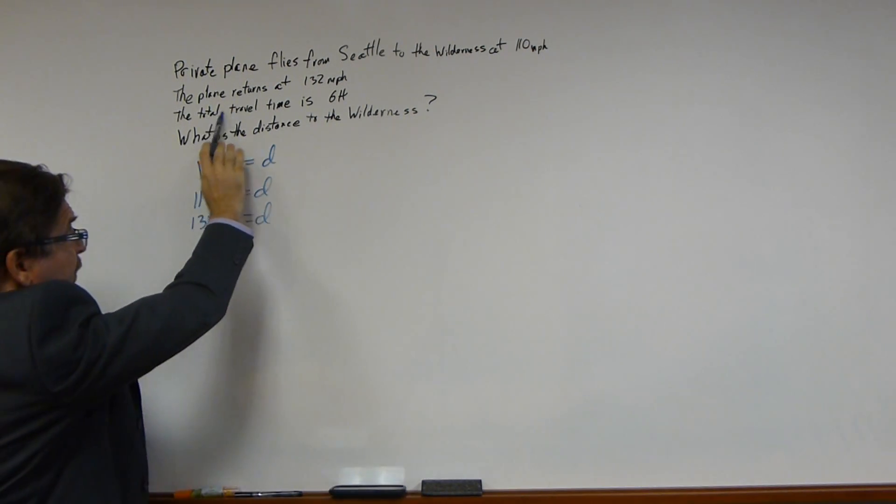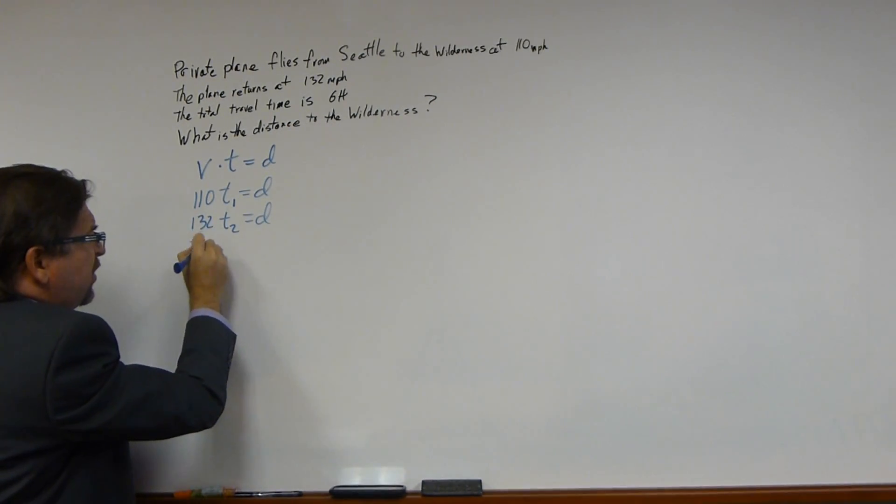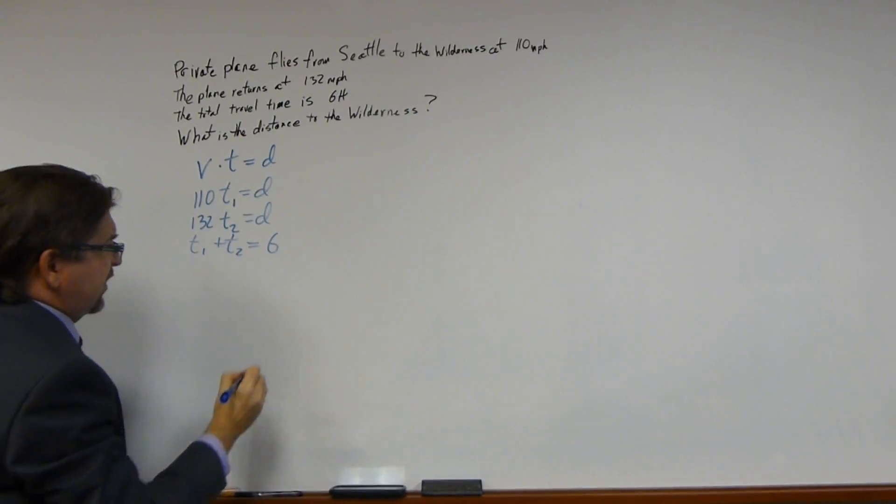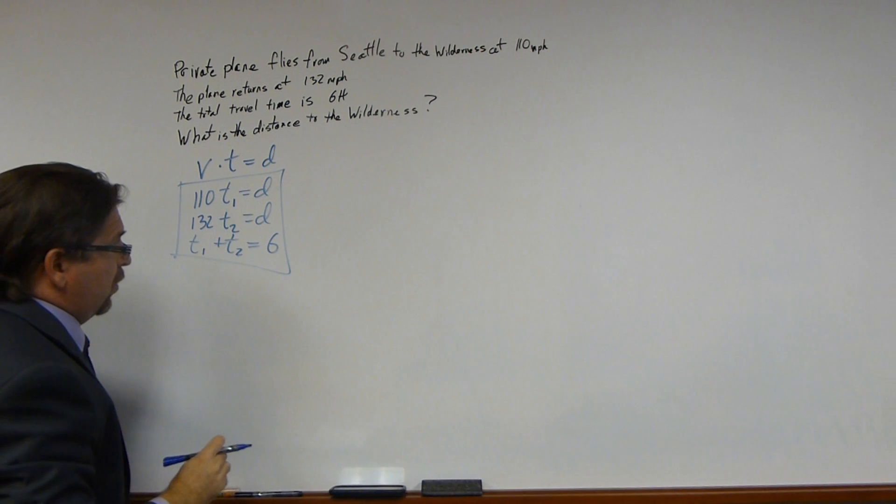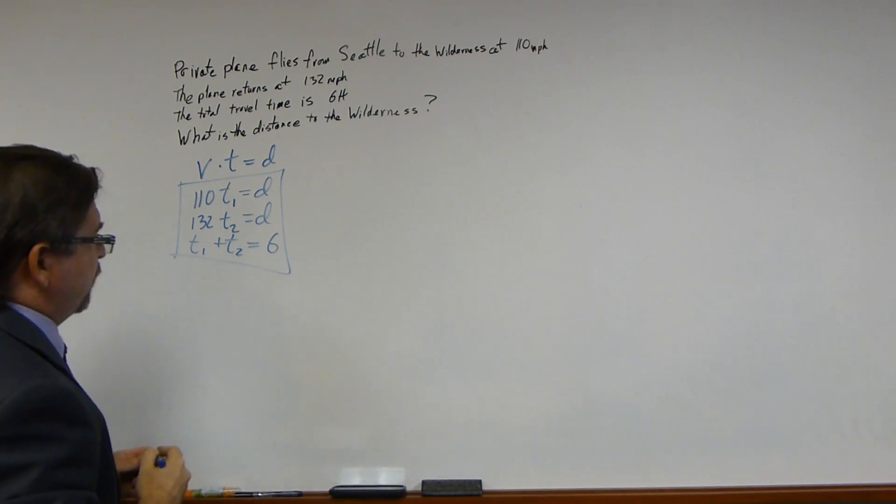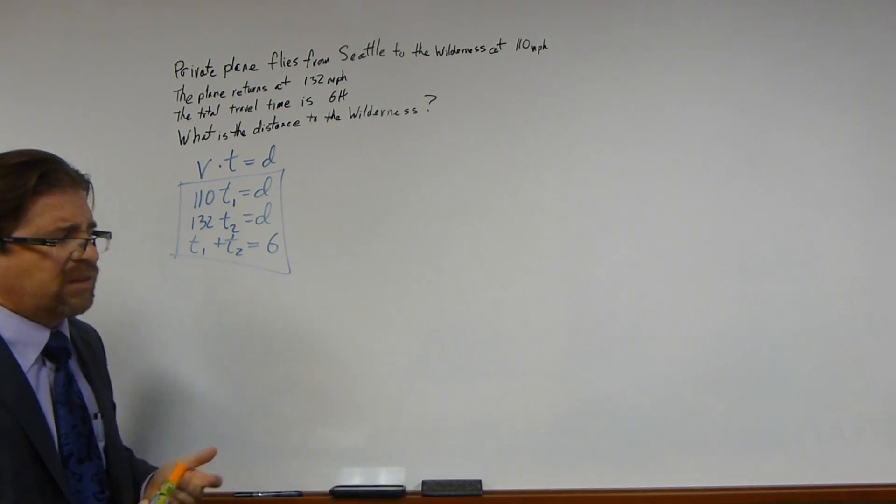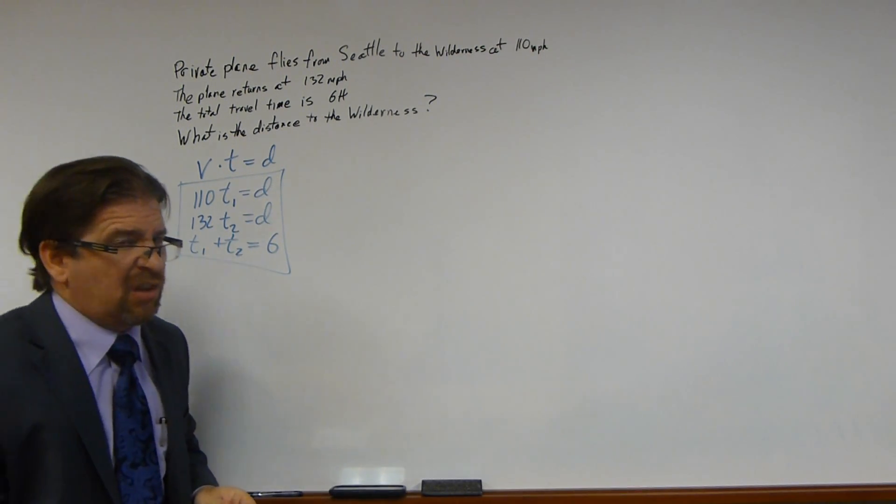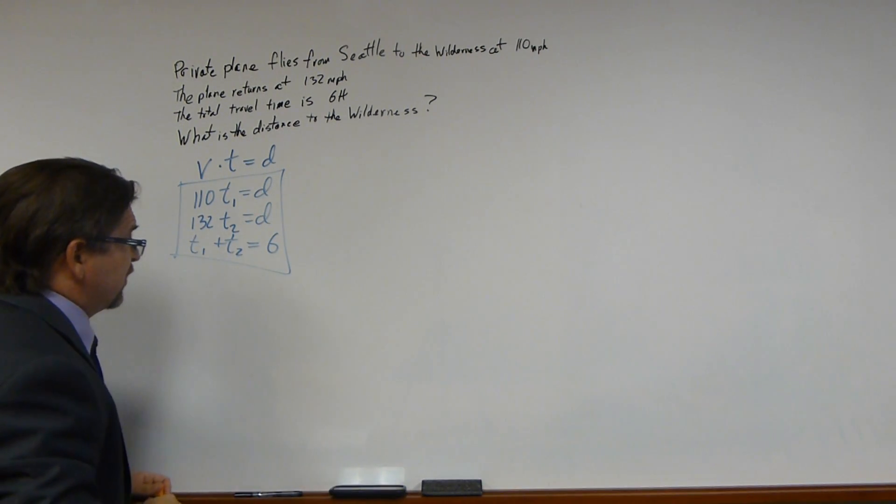But we're given another piece of information. The total travel time is six hours. So T1 plus T2 equals six. Now that we have this information, what can we do with it? We want to make this as simple as possible. So we want to solve for one variable at a time.